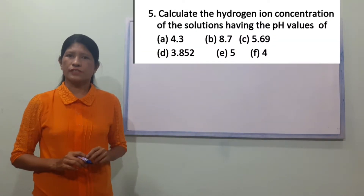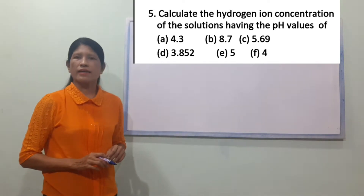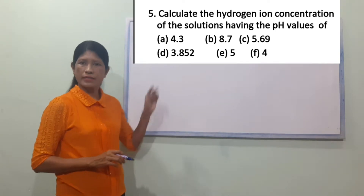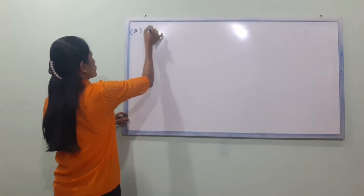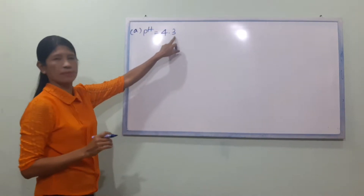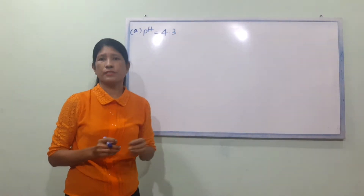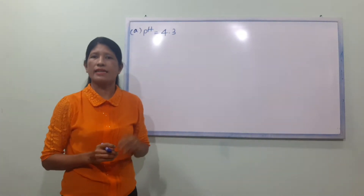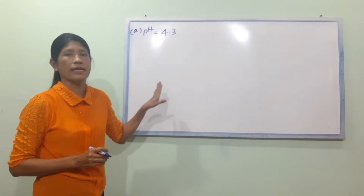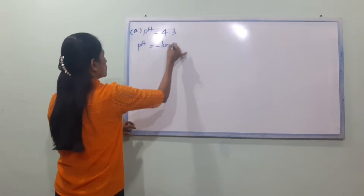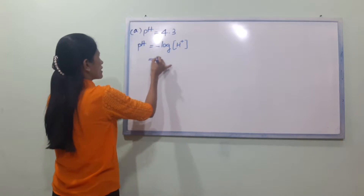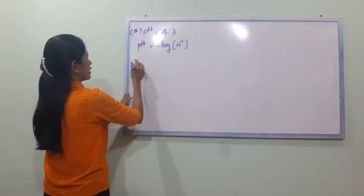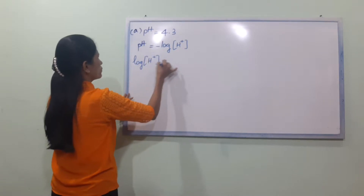So, when you compare hydrogen ion concentration, the hydrogen ion concentration of the solution has a pH value. The formula is: pH equal to minus log H plus ion concentration. And the hydrogen ion concentration is equal to 10 power minus pH.